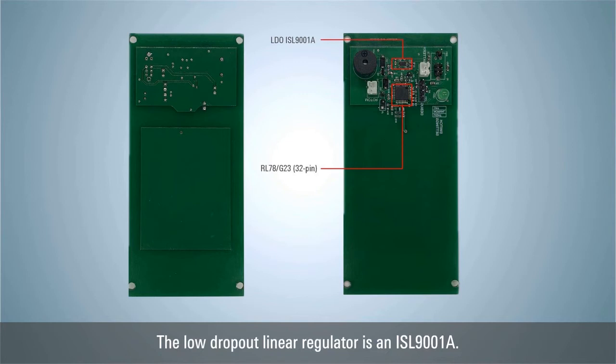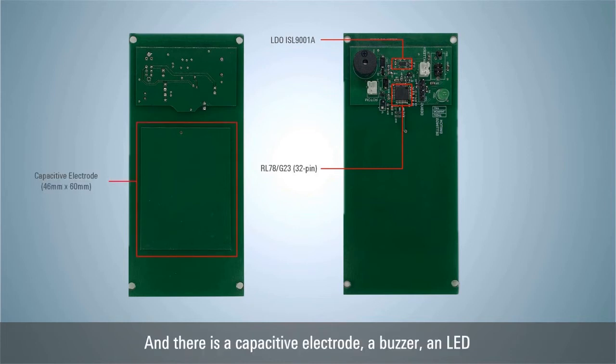The low drop-out linear regulator is an ISL9001A. And there is a capacitive electrode, a buzzer, an LED, and a motor.